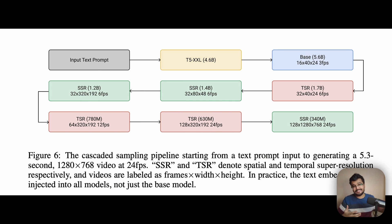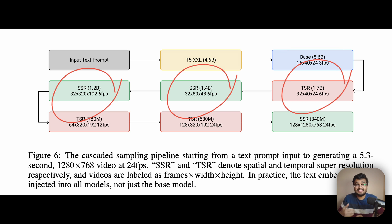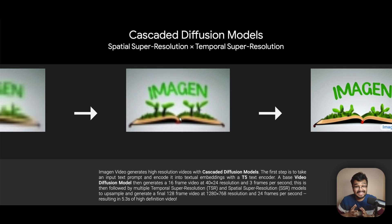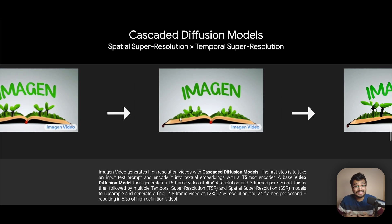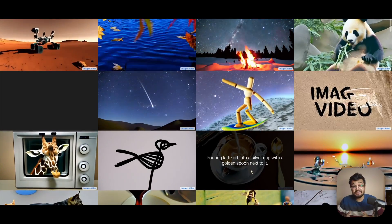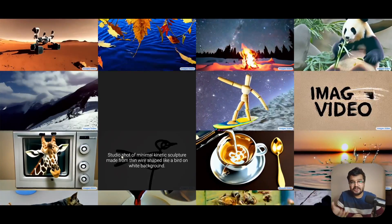Google's Imagen Video uses a cascade of seven different modules that all work together to generate a video from text. The process starts with a base video generation model that creates a low-resolution video clip, followed by a series of SSR and TSR models to upsample the spatial and temporal factors. This cascaded approach allows Imagen Video to generate high-quality, high-resolution videos with impressive temporal consistency. However, the interpolation between frames and super-scaling can still make the video appear inauthentic and not very physics-accurate.